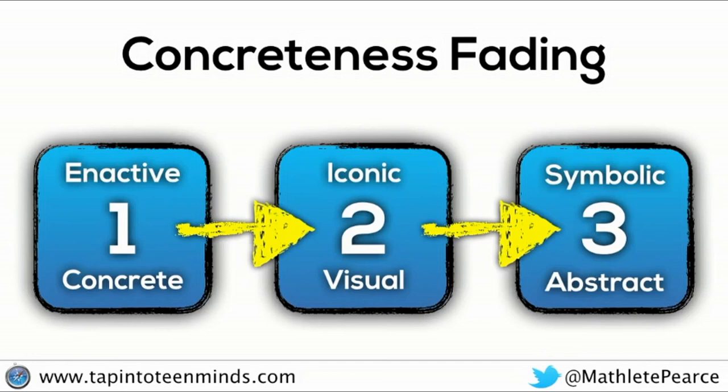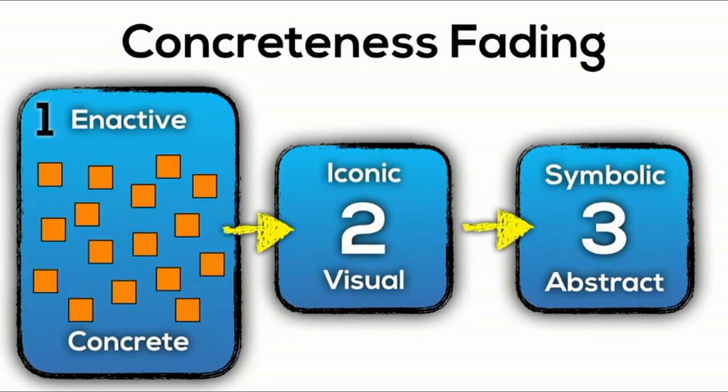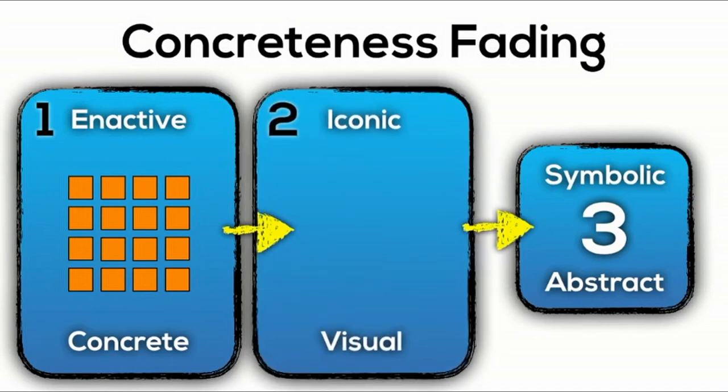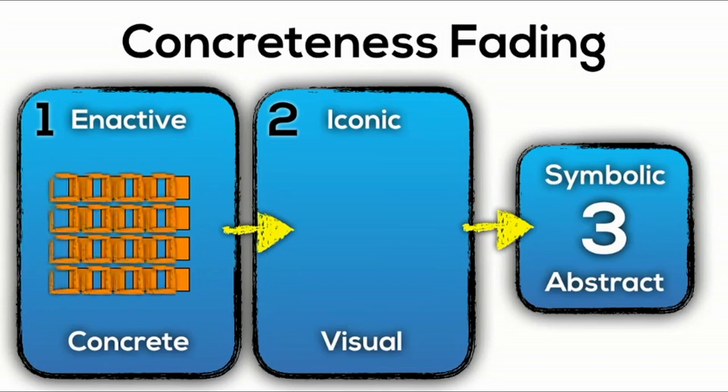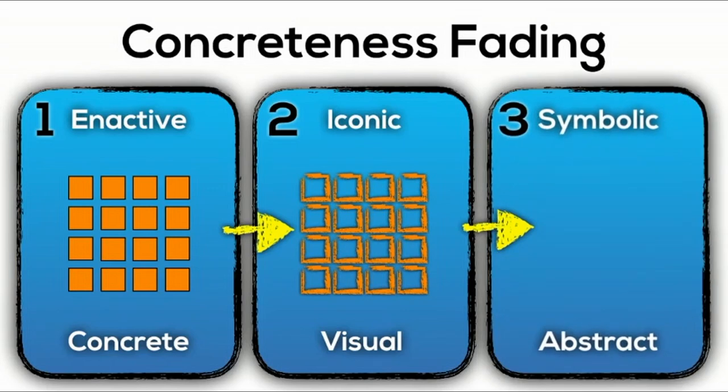So what does the multiplication we just explored today look like relative to the three stages of concreteness fading? Well, when it comes to single digit by single digit multiplication using individual unit tiles, as we did at the beginning of this video, and physically arranging them into an array, over time students don't have to grab those manipulatives anymore and instead start drawing what might look to be what those physical manipulatives look like on paper or in the mind's eye. And then finally using more symbolic notation to do the work in their head.